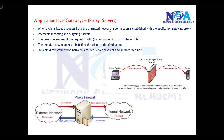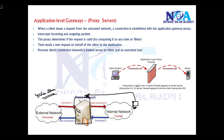Let's say there is a user on the internal network trying to access something on the internet — for example, a Yahoo server. The request is initiated from the source address 10.1.1.1 destined to the Yahoo server, but the request actually goes to the proxy server first. We maintain application-level gateways or proxy servers for this purpose.